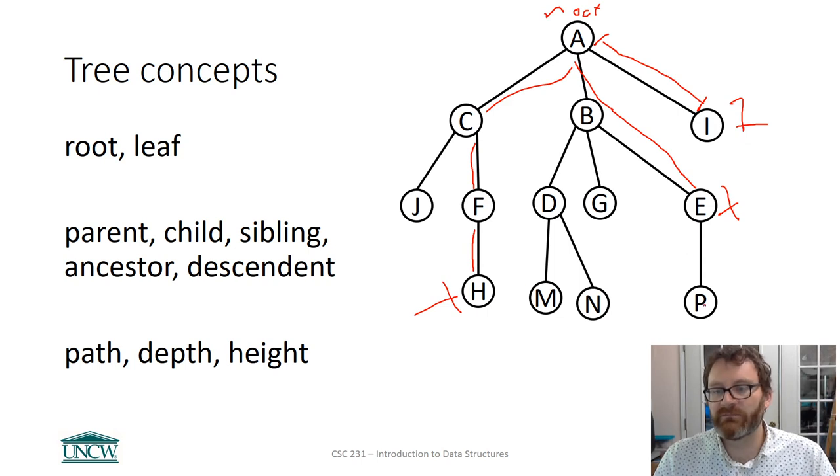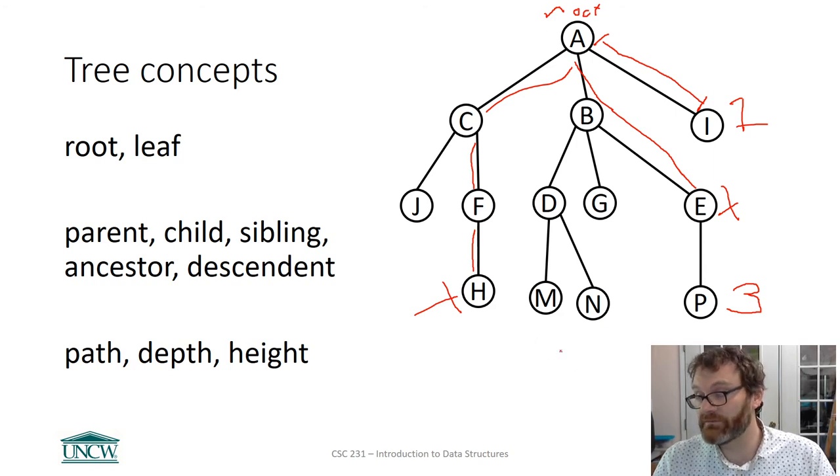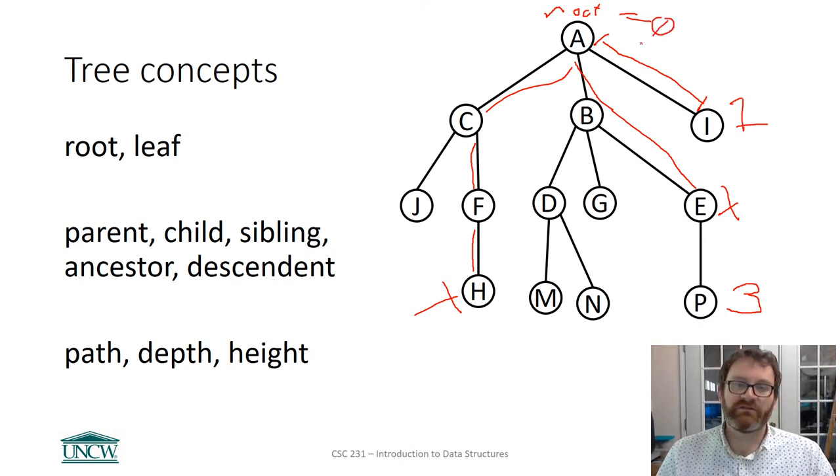How about P? What's the depth of P? Well, we got to count the edges between P and the root. So there are one, two, three edges between P and the root. So the depth of P is three. What's the depth of the root? Well, there are no edges between the root and itself. So the depth of the root is zero. So nodes have depth.